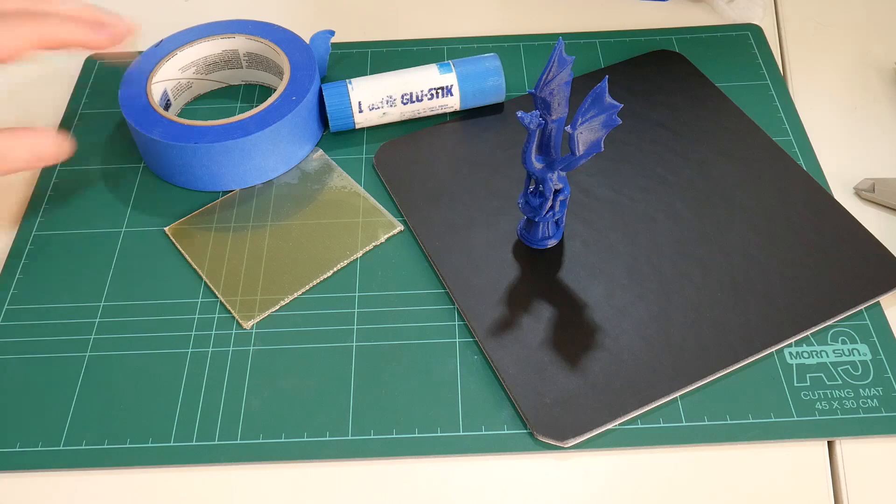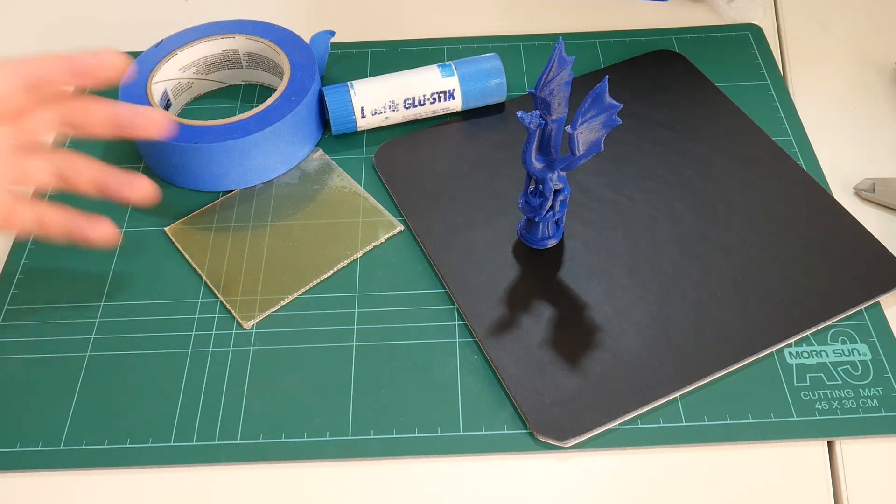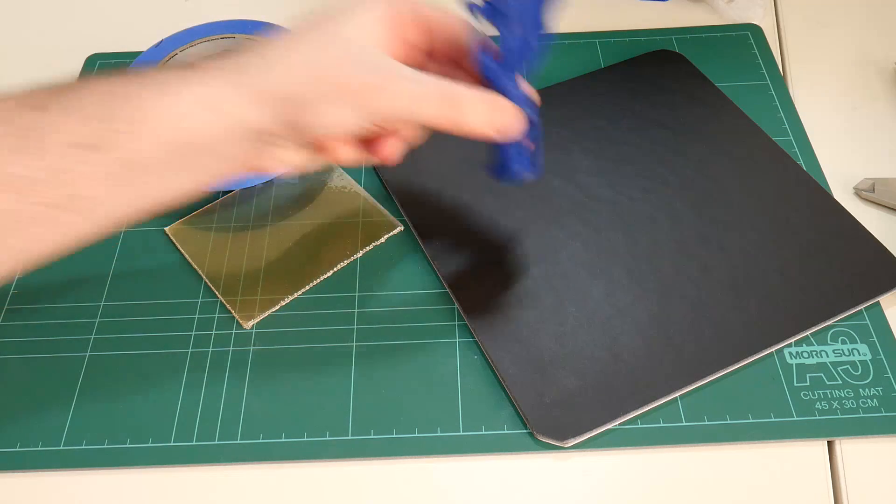Whether you use blue tape, glue stick, hairspray, PEI, or any other type of bed material, its primary purpose is to keep the part stationary while printing and to release the part when finished.